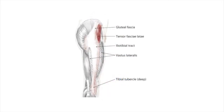Looking at the anatomy of the iliotibial band more closely: it is a thickening of the lateral outer soft tissue that envelops the leg. It starts near the anterior superior iliac spine and inserts into Gerdy's tubercle and the tibia. The thickened tissue is known as fascia — in this area it is called the fascia lata, and the thickened band is called the iliotibial band. The muscles that insert into the proximal upper portion of this band are the tensor fascia lata, a portion of the gluteus maximus, and the gluteus medius. During its latter course, it splits medially into the iliopatellar band and laterally into the iliotibial tract.